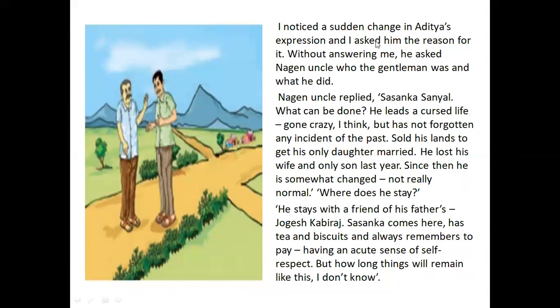The narrator noticed a sudden change in Aditya's expression and asked him the reason for it. Without answering, Aditya asked Nagin uncle who that gentleman was and what he did. Nagin said it was Sasanka Sanyal.